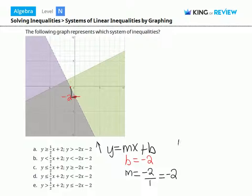The equation of our line is y equals negative 2x minus 2. Now we need to determine which inequality sign to use. Since we have a dotted line, we know that the sign will either be greater than or less than. We see that everything below this line is shaded. Therefore, y is less than negative 2x minus 2.